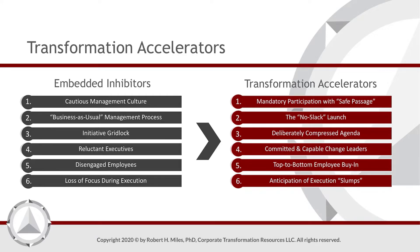But for now, let's focus on each of the accelerators and how they enable a leader to overcome the inhibitors and achieve organizational transformation in record time. And do keep in mind from our previous course module, for best results, the inhibitors need to be addressed in a particular order — the order in which they appear in this module. We'll begin with the accelerator that best equips a transformation leader to engage and overcome the first inhibitor: cautious management culture.